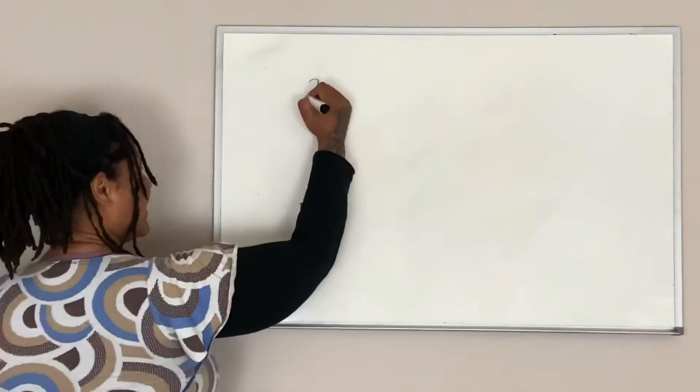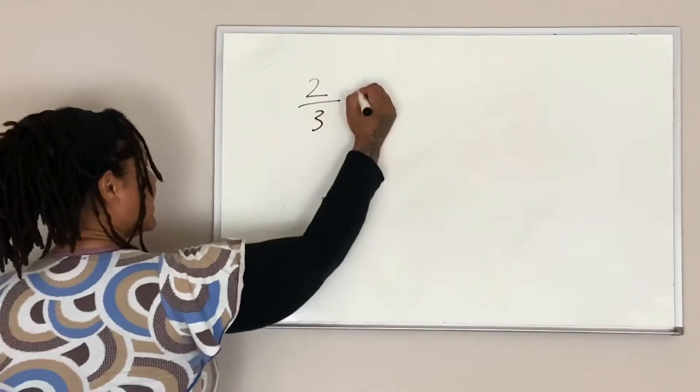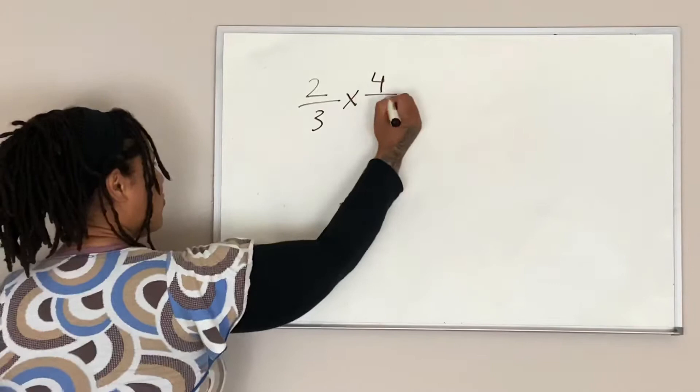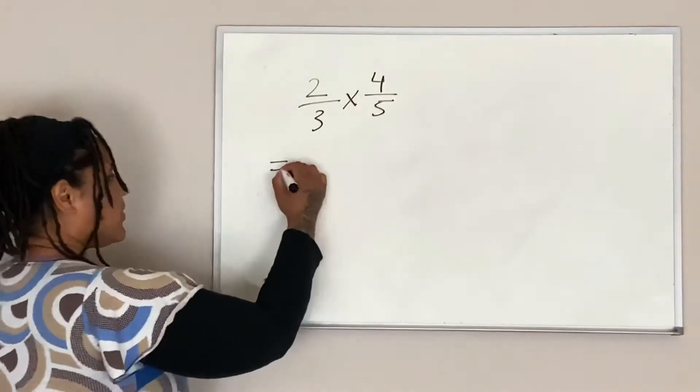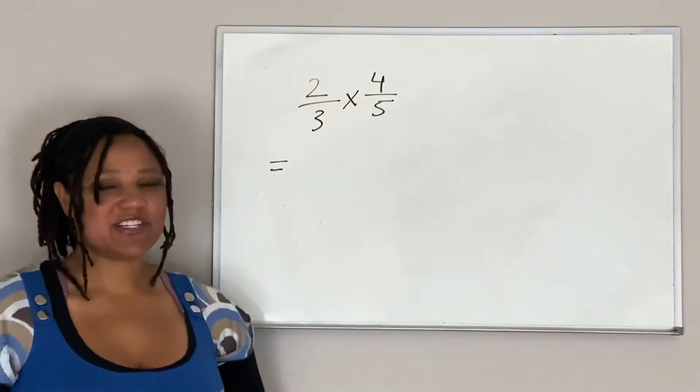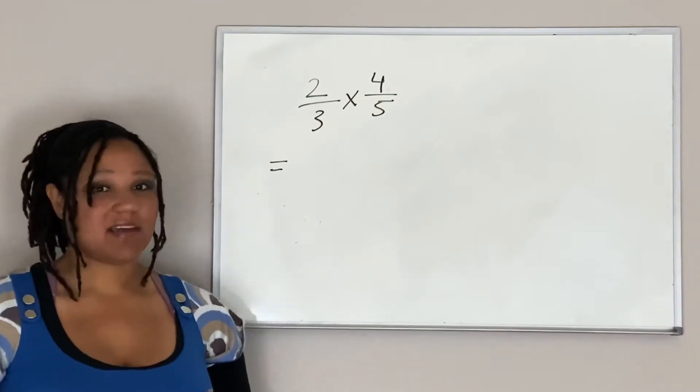So let's say I give you 2 over 3 times 4 over 5. We can just go ahead and multiply the numerators together and multiply the denominators together.